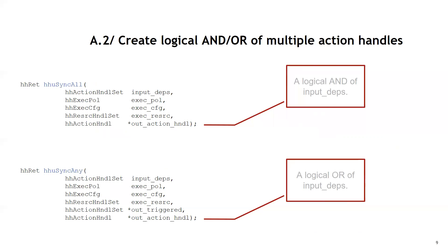Conversely, HH using any takes an input dependency action handle set, and its own output action handle will be triggered once one or more of the input dependencies trigger. It also has an additional argument for passing out the triggered action handle set — so if one action handle triggered, the set will contain one action handle; if more triggered, it would contain more.